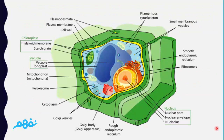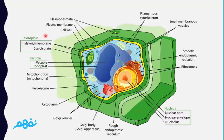These are the plant cell components. The most important component in this plant cell is the nucleus and the Golgi body, or Golgi apparatus. As you can also see, there is the cytoplasm, mitochondria, vacuole, and chloroplast.